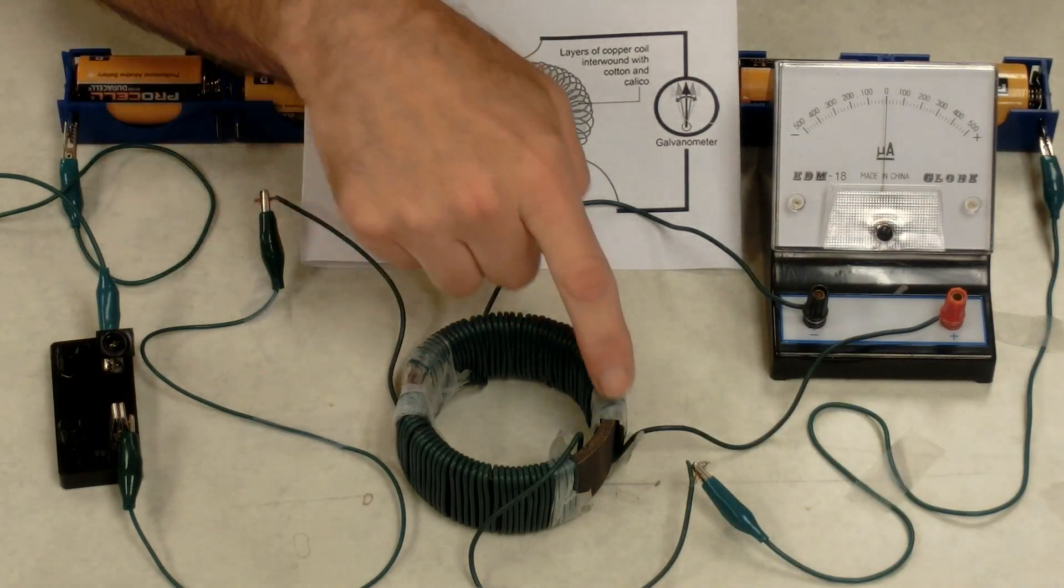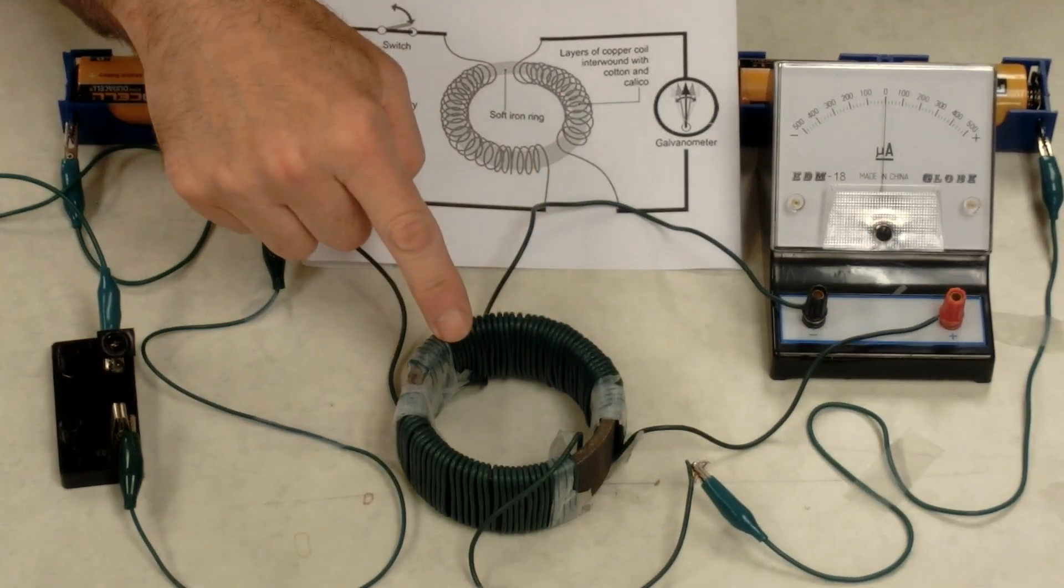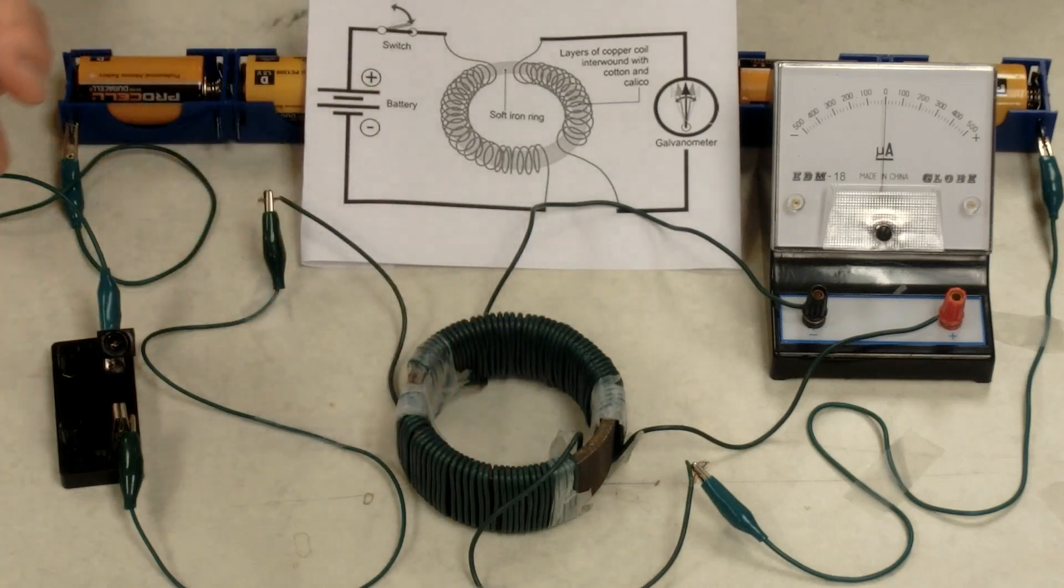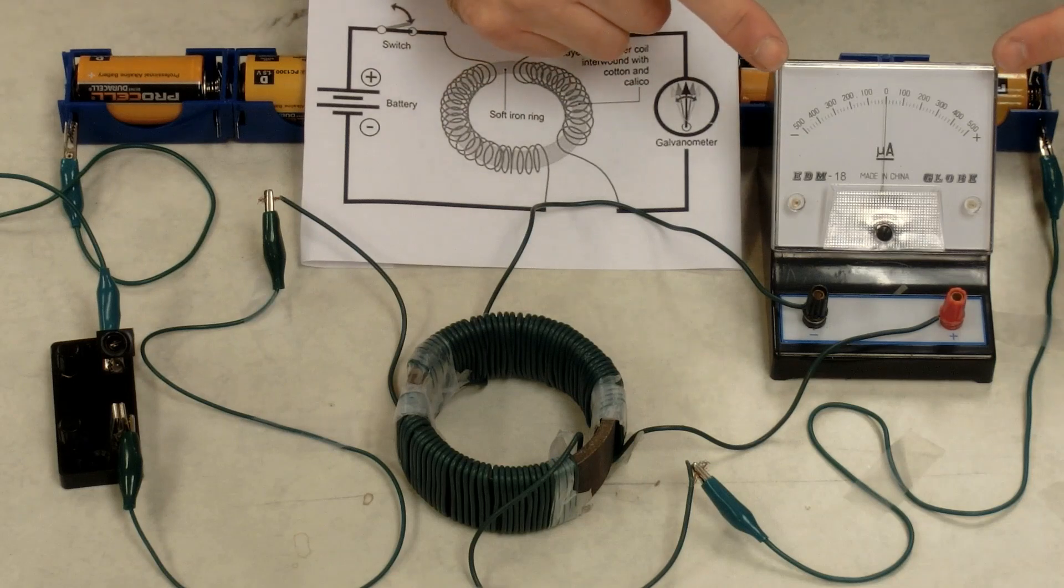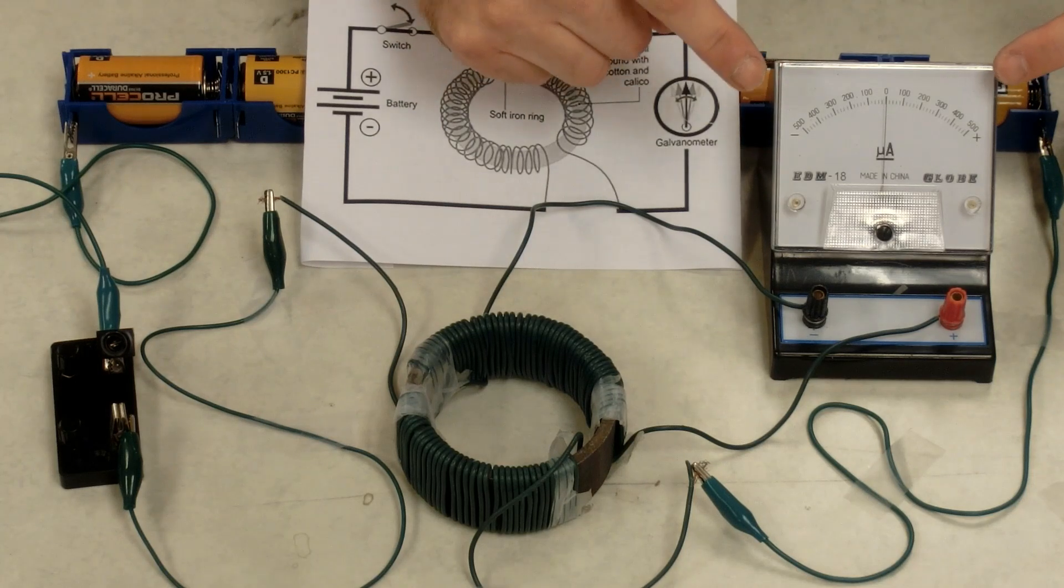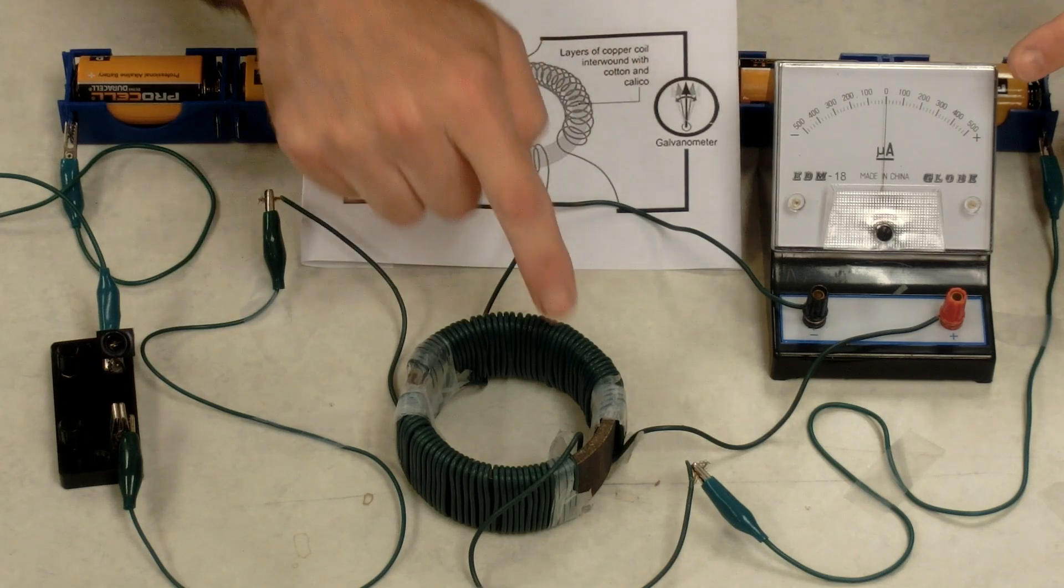This other wire is coiled around the ring. It is not connected to the wire with the battery. This wire is simply connected to a sensitive micro-ammeter. We need a sensitive current detection device connected to this wire.